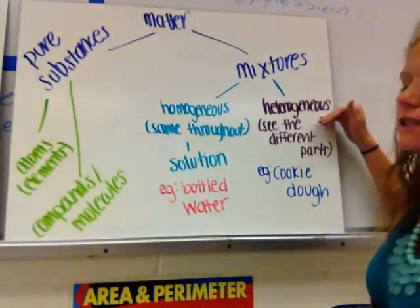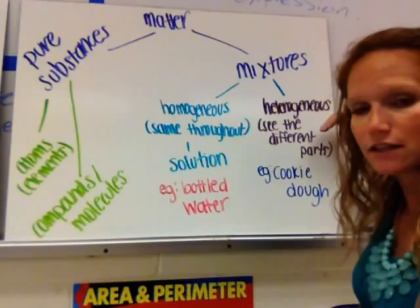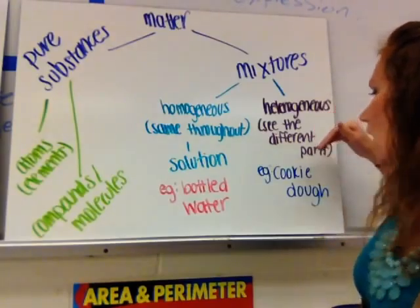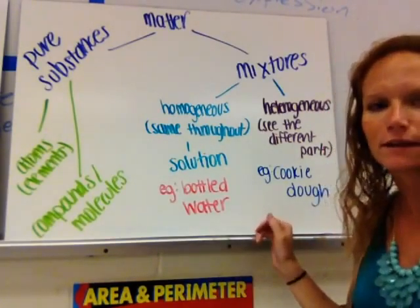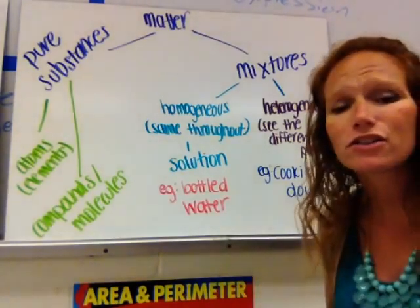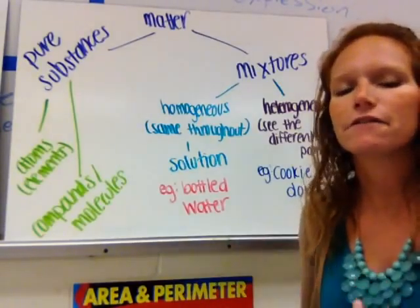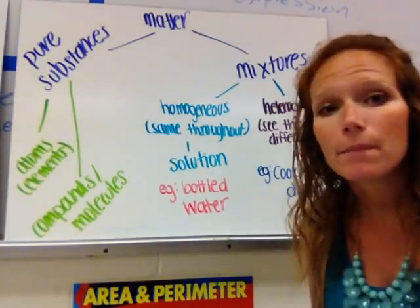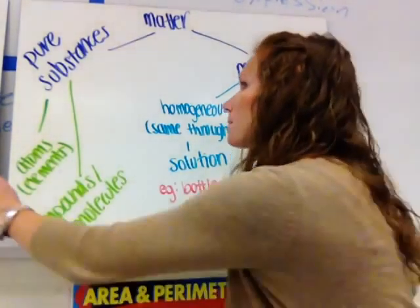Then you have heterogeneous mixtures, where you can see the different parts. Good examples of that are chocolate chip cookie dough — you can easily see the different parts — or peanut butter, where you can see those different parts.